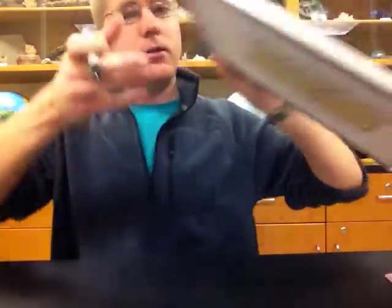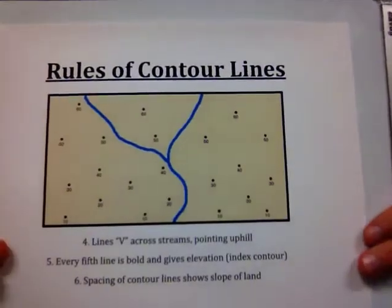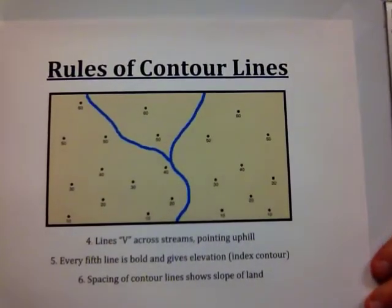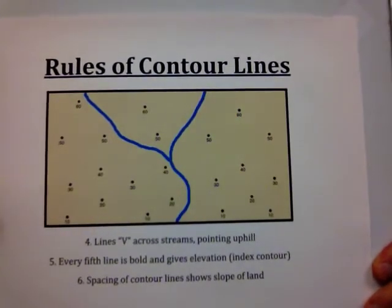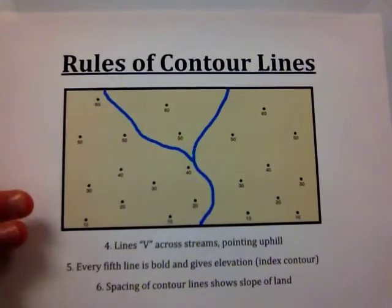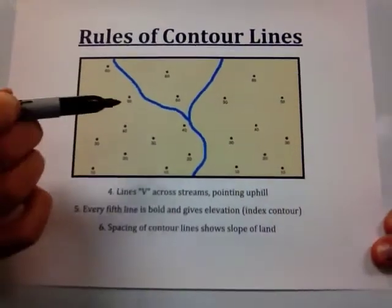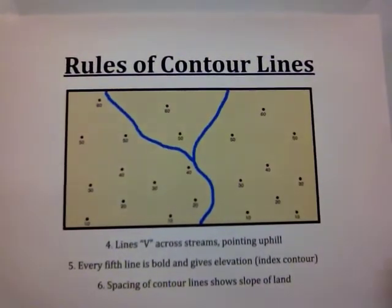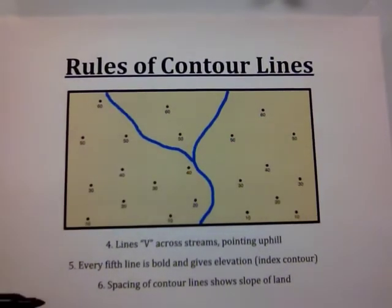The next three rules add some complications. When we have a stream, streams carve valleys, and valleys change the elevation of the land's surface in an area. When contour lines cross a stream, they make a V shape — which I'll draw in just a second so you can see what it looks like. The V points to higher elevations.